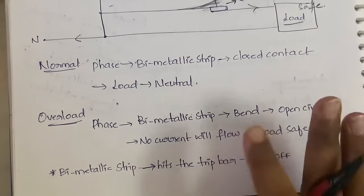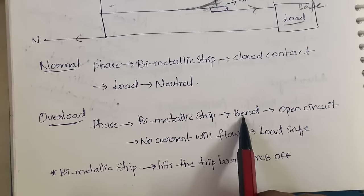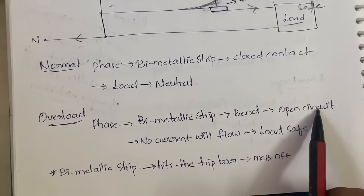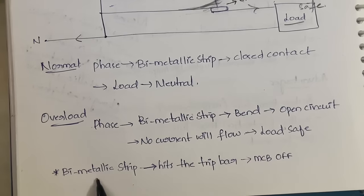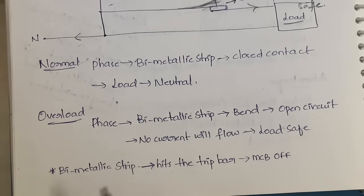To summarize overload protection: current flows from phase to the bimetallic strip; the excess current heats the strip, it bends and the circuit becomes open so no current flows and the load is safe. The bimetallic strip also hits the trip bar, which displaces and turns off the MCB switch.